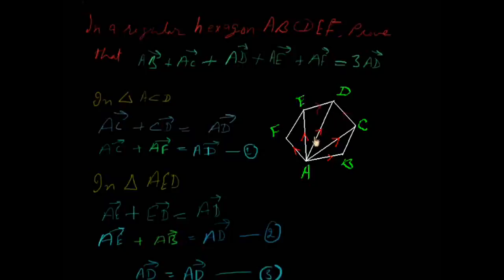So, we just now change CD vector with AF vector because CD vector is equal to AF vector. This is the first point. Now,